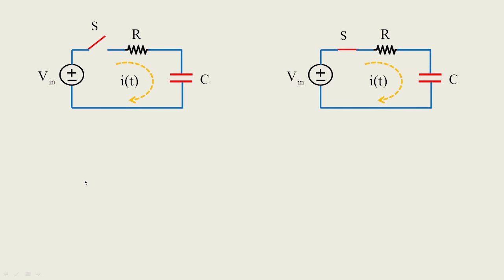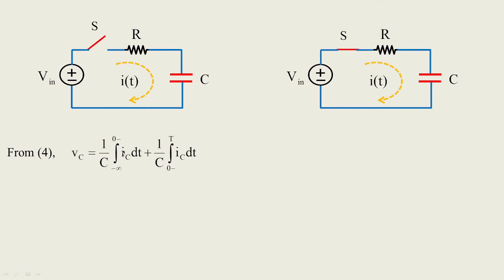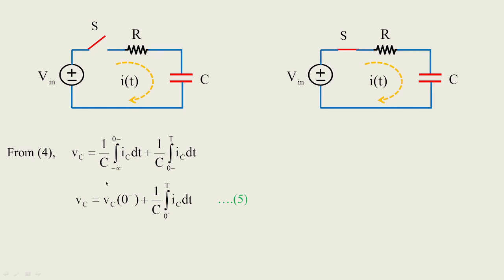Taking the limit conditions from −∞ to t, equation 4 gives: vc = (1/C) ∫ ic dt. Applying limits and dividing the integral from −∞ to 0− — just before switching — plus (1/C) ∫ from 0− to t of ic dt, the after-switching condition. This gives us: vc = vc(0−) + (1/C) ∫ from 0− to t of ic dt. This is another important equation to remember for capacitor conditions.